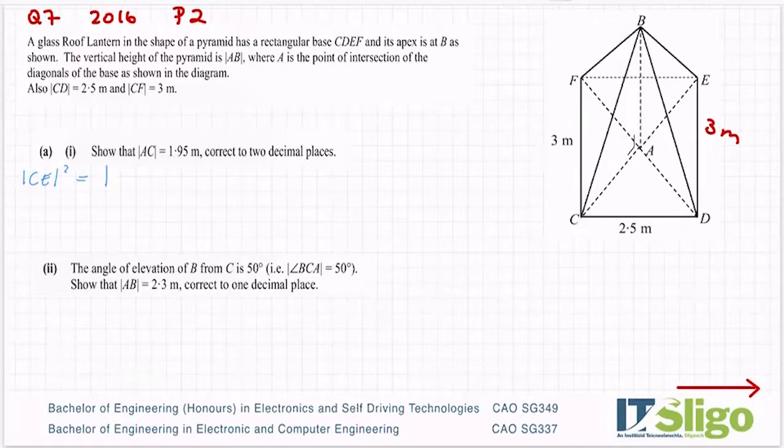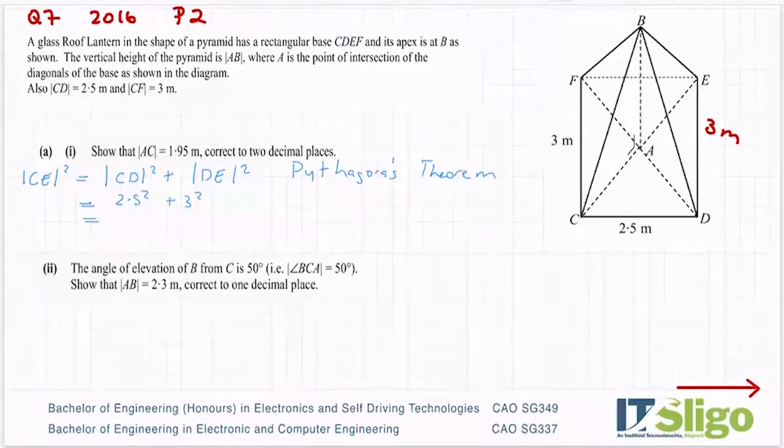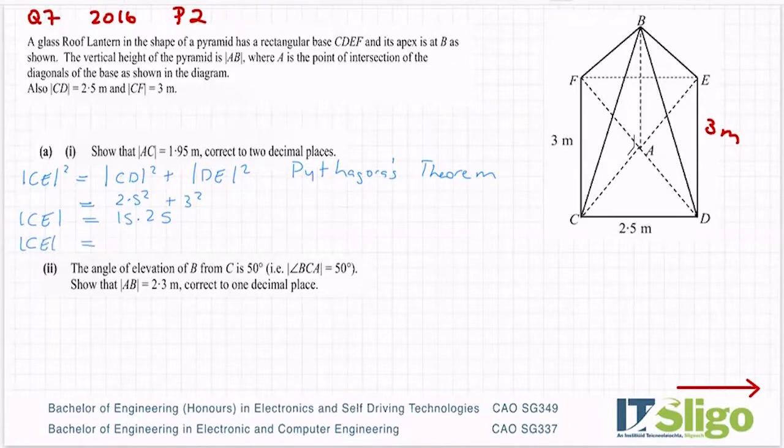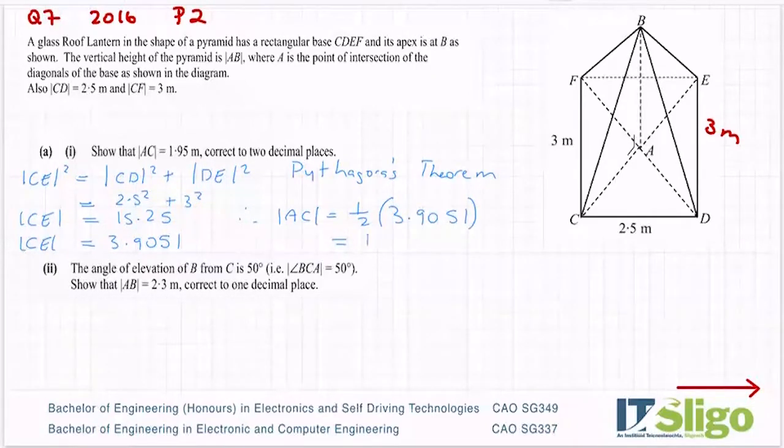So CE squared is equal to CD squared plus DE squared. This is Pythagoras' theorem. So it's equal to 2.5 squared plus 3 squared. 2.5 squared plus 3 squared, and I'm getting 15.25 for that. Let's square root that to get the length of CE, and I'm getting 3.9051. And therefore, the length of AC is equal to half of 3.9051, so divide by two, and I've got 1.9525. So 1.95, that's perfect, correct to two decimal points.